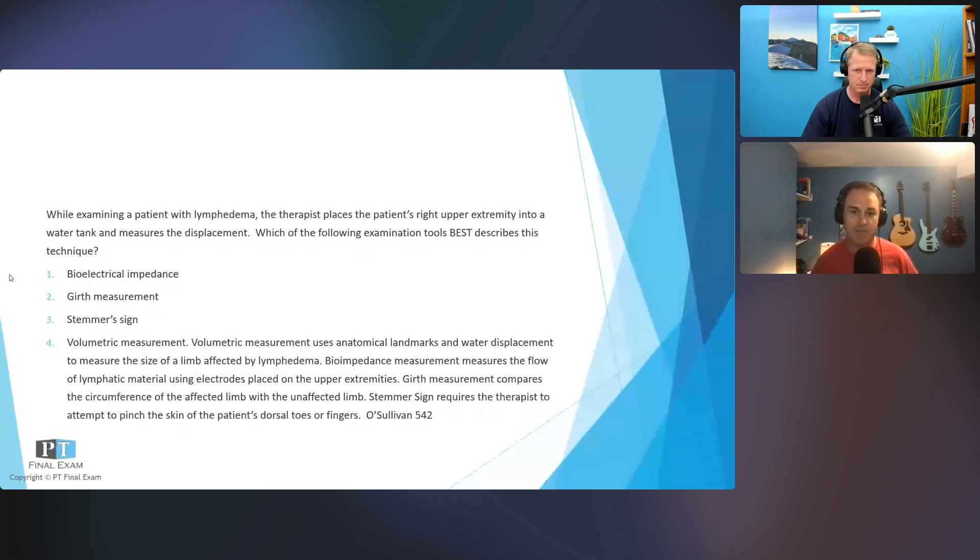Going through, looking at the volumetric measurement is going to be the answer for that. Girth measurements, Stemmer signs, all of these are things that are related to lymphedema, but when you're looking at how much water escapes out of the bucket, the barrel, however you want to put it, then that's where we're looking. If you're watching this on YouTube, you can kind of see this breakdown here. I'll just give a readout of the rationale.